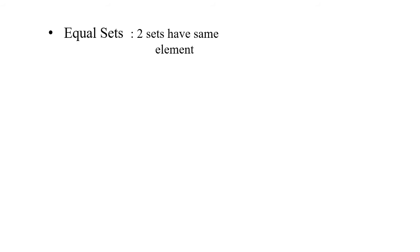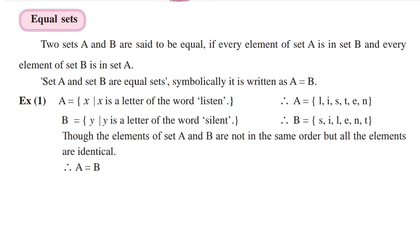The last set type is equal set. Equal means same. If two sets have the same elements, they are called equal sets. Set A and set B are said to be equal if every element of set A is present in set B, and every element of set B is present in set A. Symbolically, it is written using the equals sign.